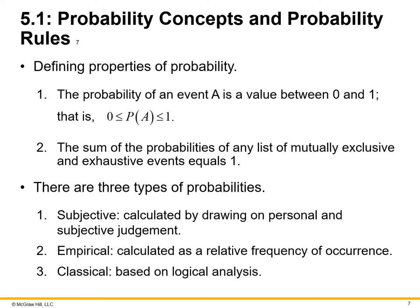Now, we must define our properties of probability. The probability of an event A is a value between 0 and 1. That is, 0 with a probability of A less than 1. Somewhere in there, an event A is between 0 and 1. The sum of probabilities of any list of mutually exclusive and exhaustive events equals 1. There are three types of probabilities. One, subjective, calculated by drawing on personal and subjective judgment. At times, we need to look at historical records or experience and intuition to come up with that subjective probability.